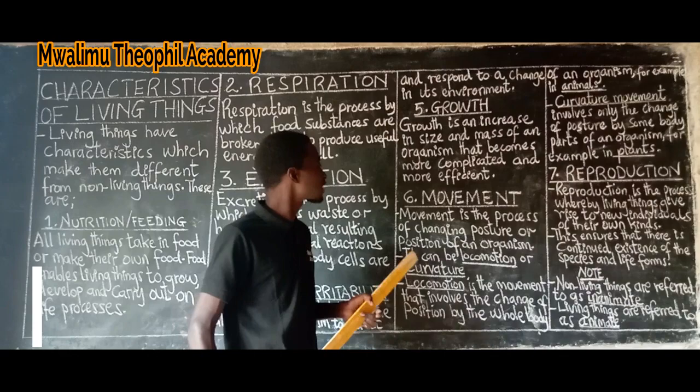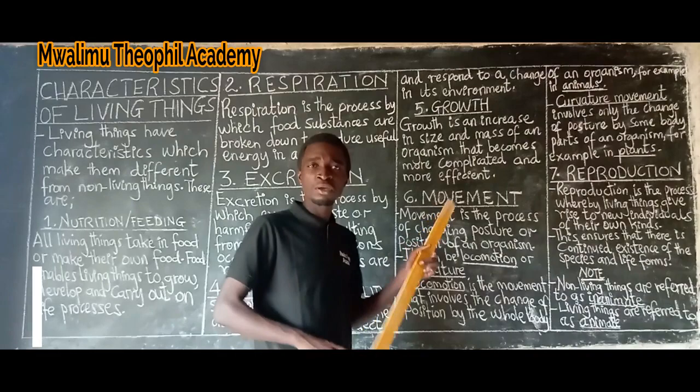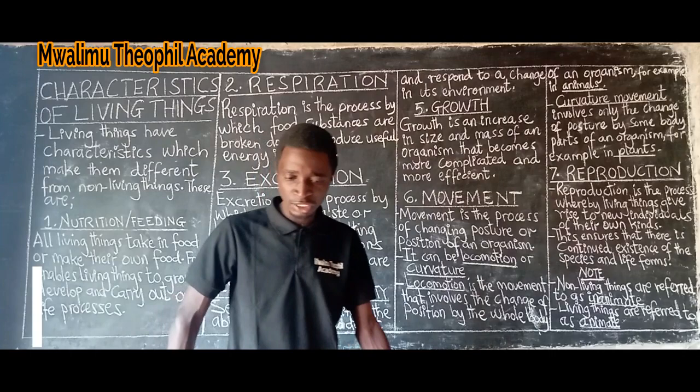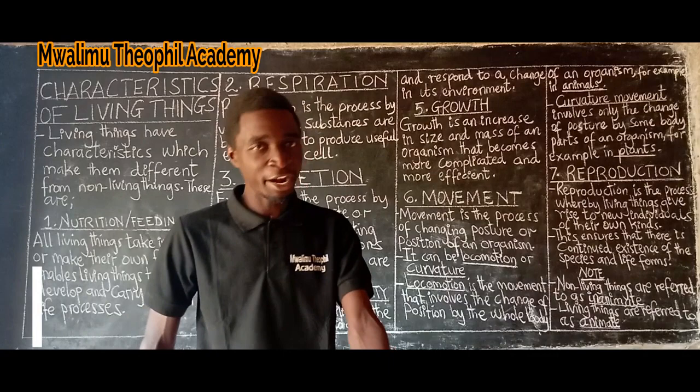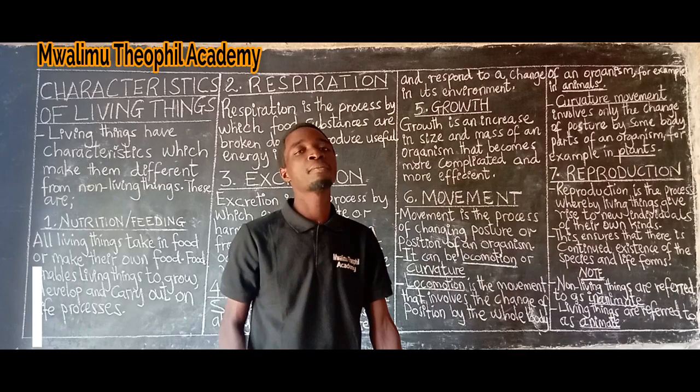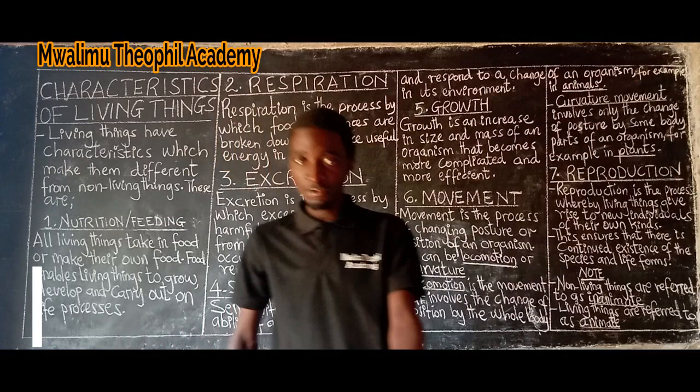The sixth characteristic is movement. Movement is the process of changing posture or position of an organism. Movement can be of two types: locomotion and curvature movement.